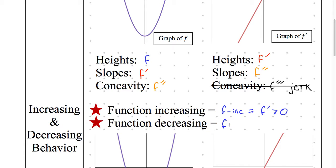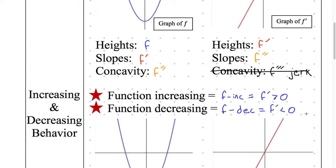F decreasing abbreviated as Dec. And the definition, anyone want to take a guess? F prime is less than zero. That one also needs to be locked into your memory. Those are super importante.